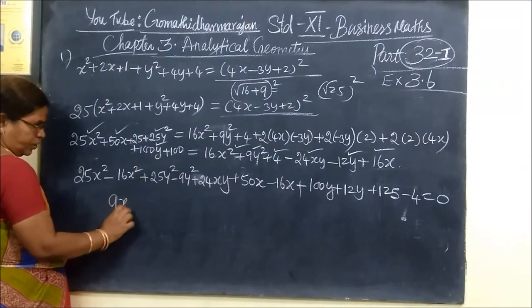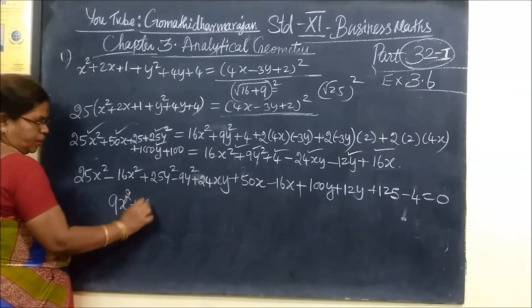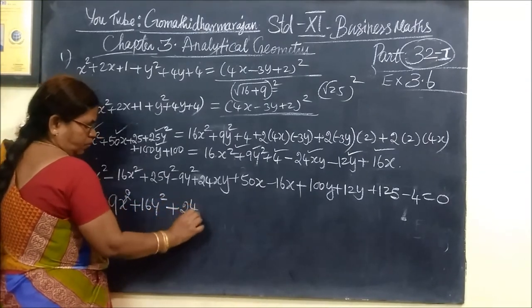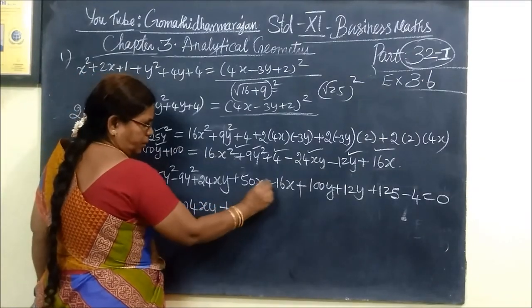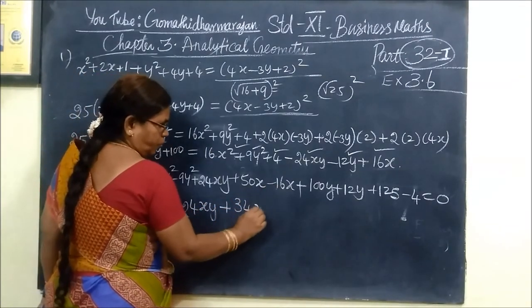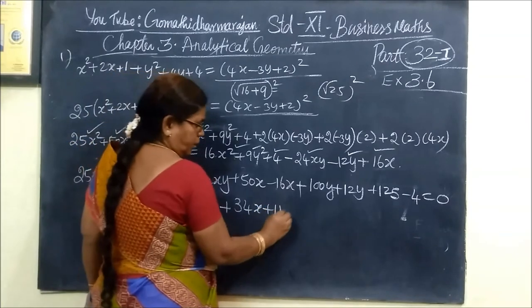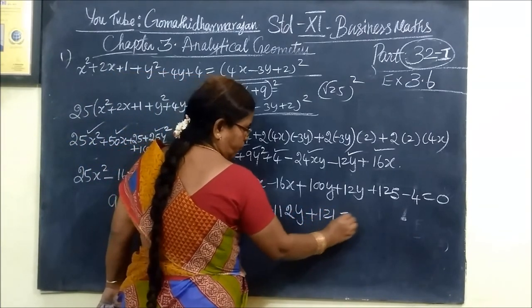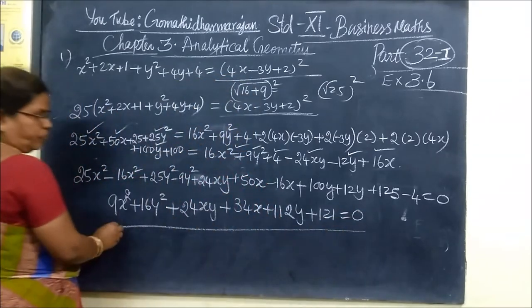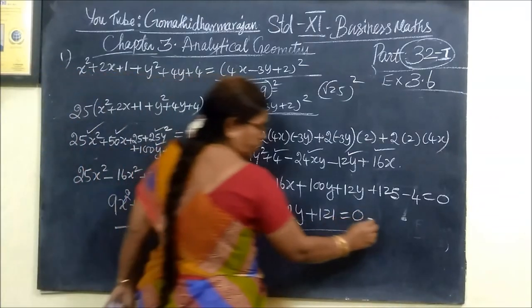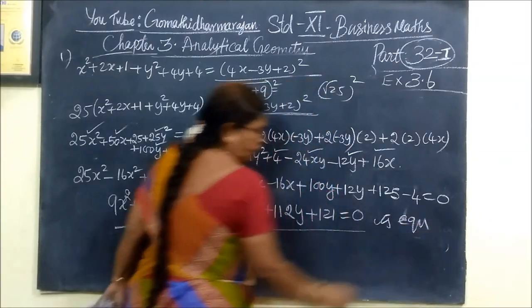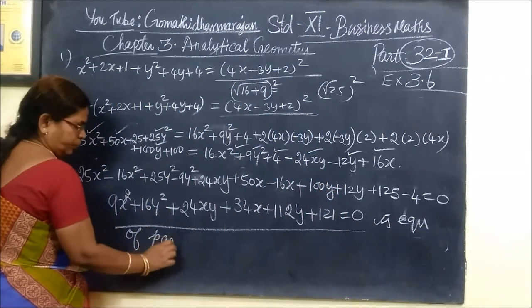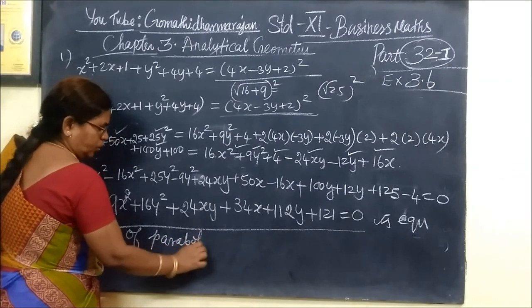After simplification: minus 9x squared plus 16y squared plus 24xy, then 74x plus 112y plus 121 equal to 0. This is the equation of the parabola.